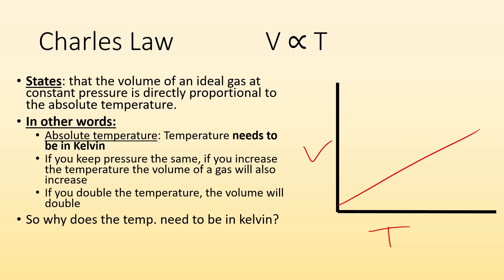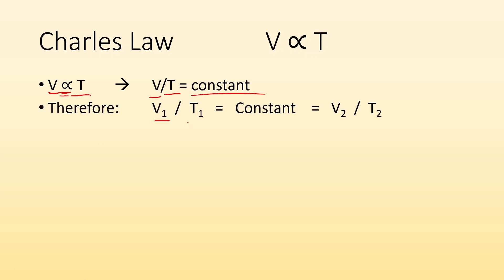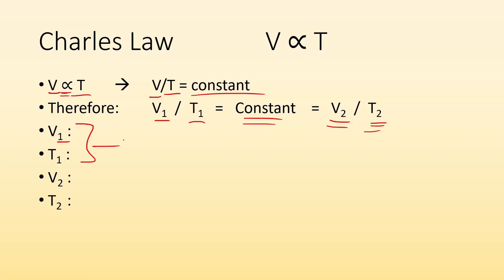Charles' Law in words: the volume of an ideal gas at constant pressure is directly proportional to the absolute temperature. Absolute temperature means Kelvin — you can't use Celsius because double zero is still zero. Mathematically, volume divided by temperature equals a constant, meaning V1 over T1 equals V2 over T2. The subscript 1 represents initial values and 2 represents the new values for volume and temperature.